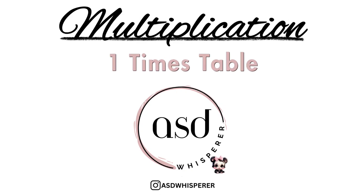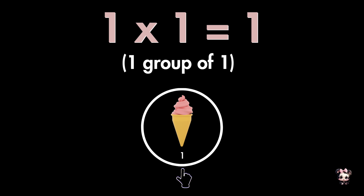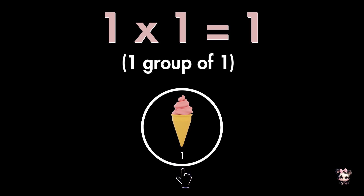Multiplication 1 times table. 1 times 1 also means 1 group of 1 ice cream, therefore 1 group of 1 ice cream is 1.